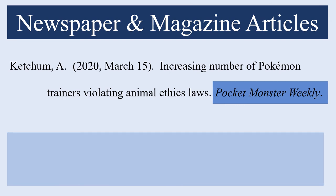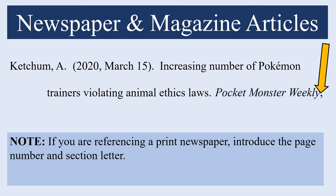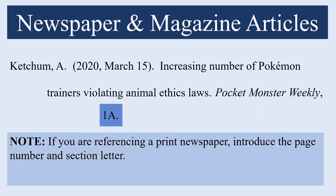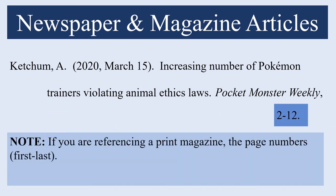The reference entries for print newspapers and magazines differ slightly; however, their online counterparts are formatted in essentially the same way. If you have a print source, you will follow the name of the newspaper or magazine with a comma rather than a period. In the case of a newspaper, you will then introduce the section letter and page numbers, closed with a period. In the case of magazines, you'll introduce the page range, likewise closed out with a period.